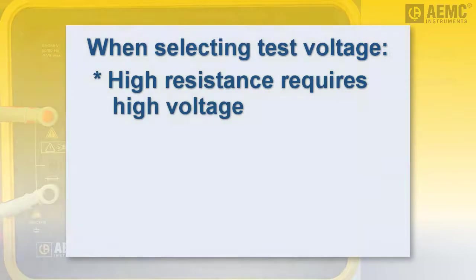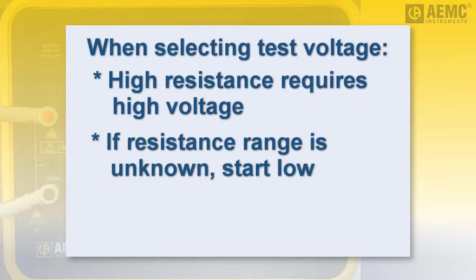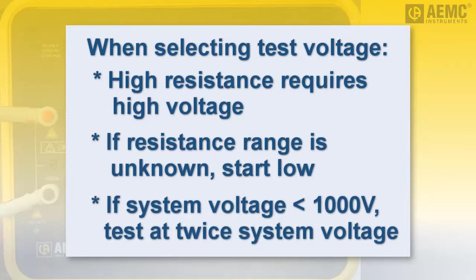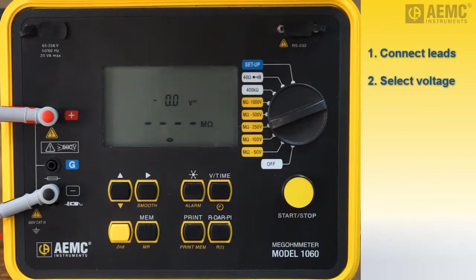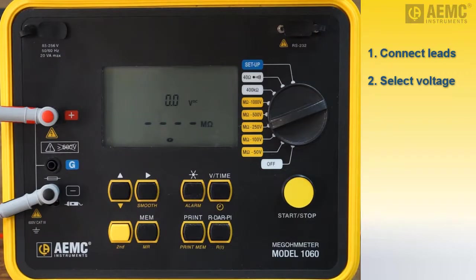In general, the higher the resistance to be measured, the higher the test voltage. In cases where the resistance is unknown, it's good practice to start with the lowest voltage and gradually increase until the measurement results are consistent. As another rule of thumb, we recommend testing at twice the system voltage, as long as the system voltage does not exceed 1000 volts. In our example, we will start with the 250 volts setting. After a few moments, a voltage reading appears on the screen — this is the external voltage present in the test specimen. As a safety feature, if during testing external voltage exceeds 25 volts, a warning symbol appears and the instrument immediately stops the test.